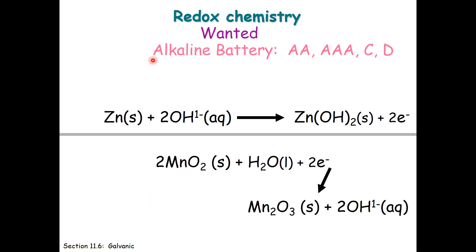Some of our oldest battery technology is the alkaline battery. These would be the AA's or AAA's that you might find in your calculator, or C and D batteries, which are in larger toys and flashlights. They are called alkaline batteries because they involve hydroxide, which means that their environment they operate in is basic. Shown here are the two redox reactions involved.